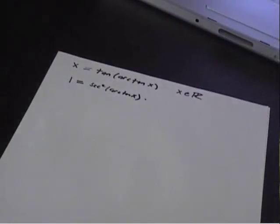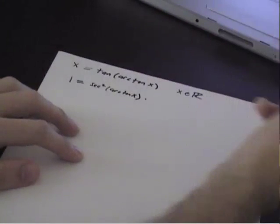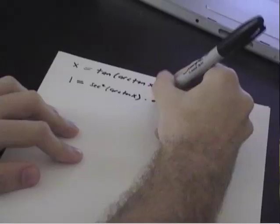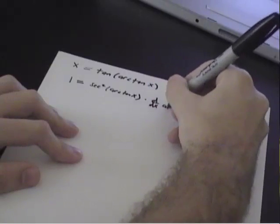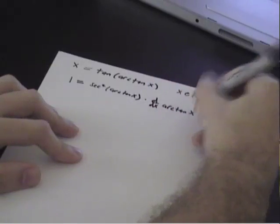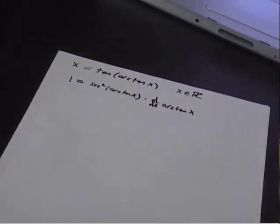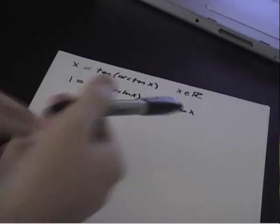So we have secant squared of the inside. This is our chain rule. And now, oh, derivative of arctangent. Well, hey, we don't know what that is. So, we still have to do this. Let's just say d dx of arctangent of x. That's legitimate. We just don't know what it is. So we want to solve for that.